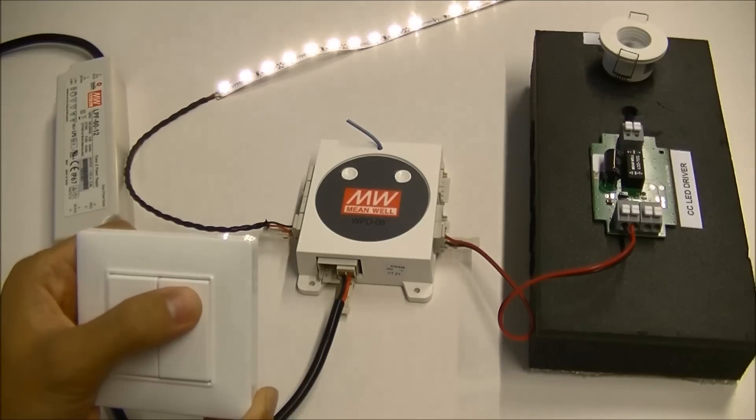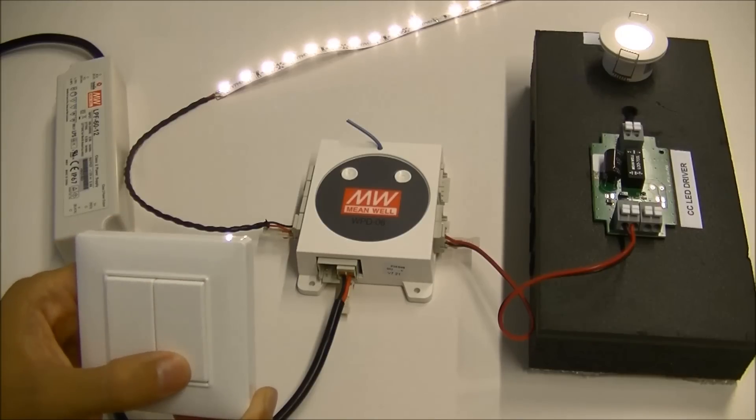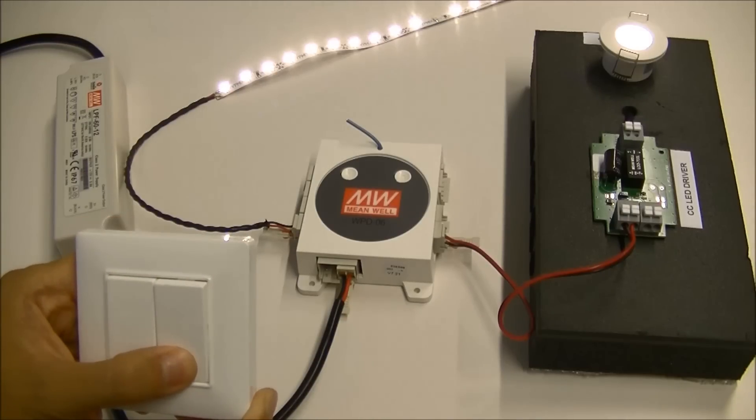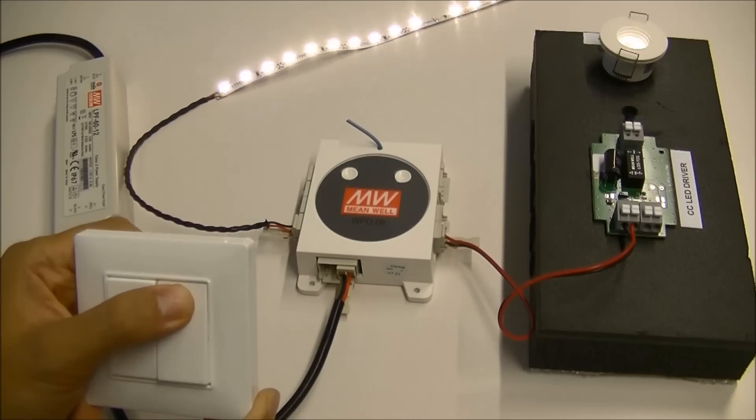Now, press the right top switch to turn on LED lamp connected to channel 6. Now, press the right bottom switch to turn off LED lamp. Turn on the LED and dim down the light. Now, dim up the light.